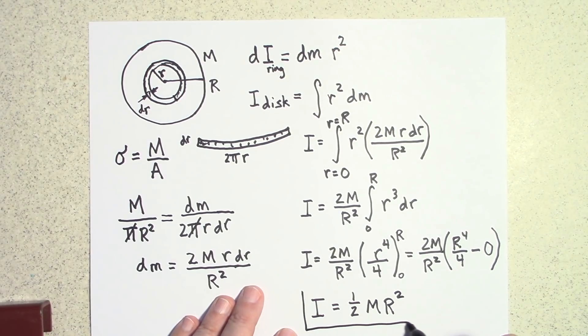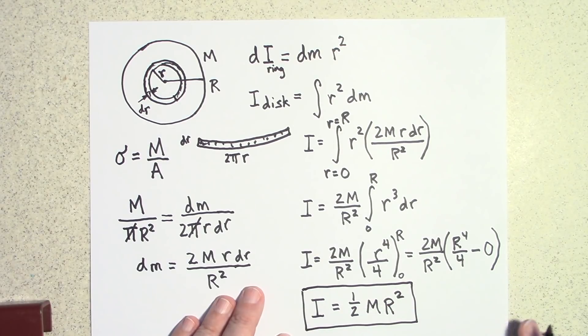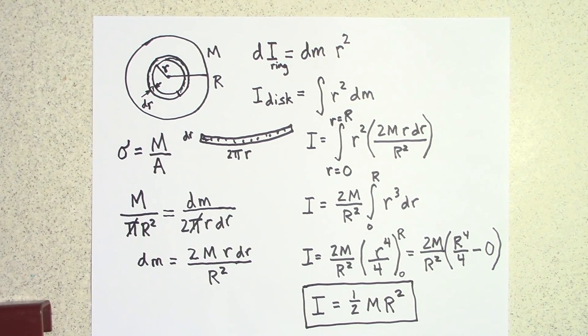All right, that's what we were after. That's the rotational inertia of a solid disk that has a uniform mass density. All right, thanks for watching. Bye.